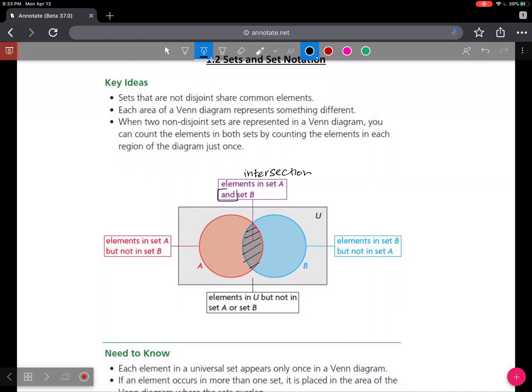And we use the word AND for that section. And look at the second bullet. It says each area of the Venn diagram represents something different. So we've established that's the intersection. Those are the members in set A and B that are in common.